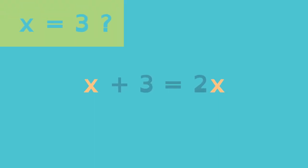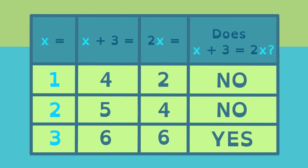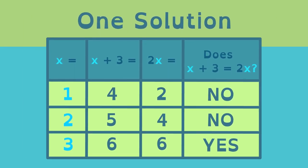Let's try x equals 3. 3 plus 3 is 6. 2 times 3 is also 6. x equals 3 is the solution to this linear equation because it makes the equation true. This particular equation has only one solution, 3.